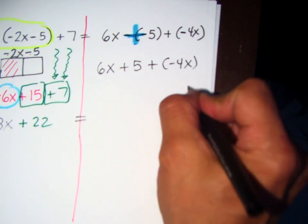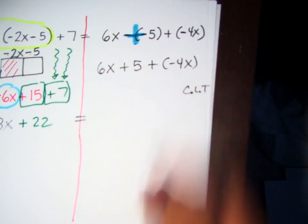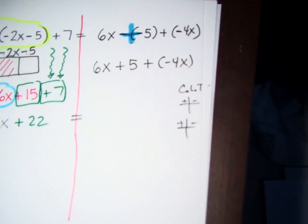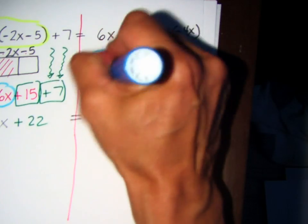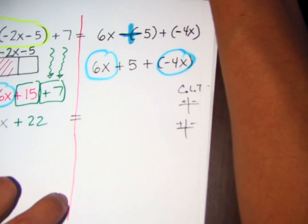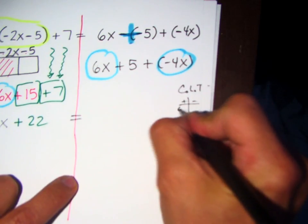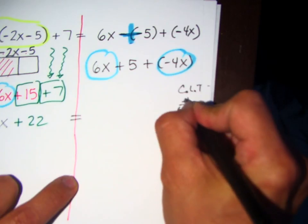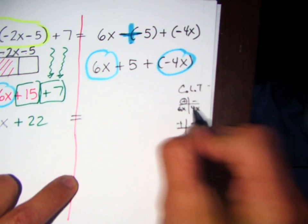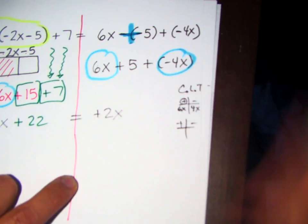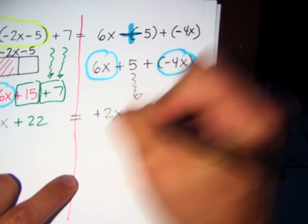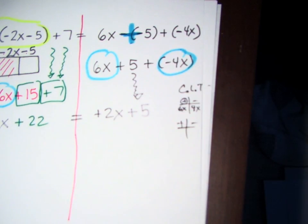So now I'm going to combine like terms — CLT. We might use 1 or 2 t-charts. So what am I going to circle? The 6x and the negative 4x. Where are we going to put it? Who has more? Positive. They're not together, so I'm going to subtract — 6x take away 4x is positive 2x. Am I done? No. Plus 5. For right now, that's all I want you to do.